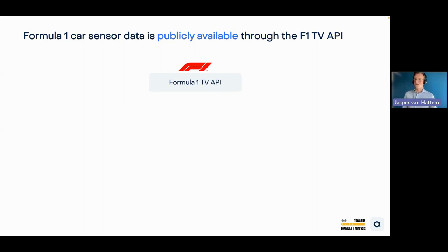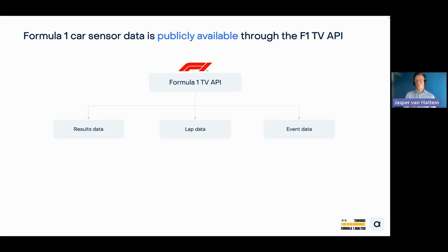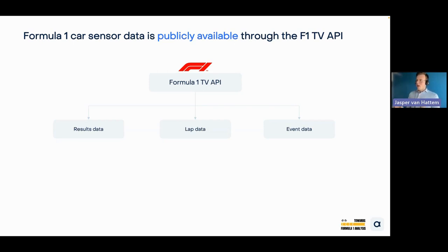Now let's talk about Formula 1 data — what we have, what it looks like, and what we can do with it. Formula 1 TV has an API with a lot of data available. You can get results data — who finished where during which session, FP1, FP2, FP3. There's also lap data: how fast each lap was, sector times, speed, tire compounds used, and more. There's also event information like weather conditions. The lap data is what we're most interested in.